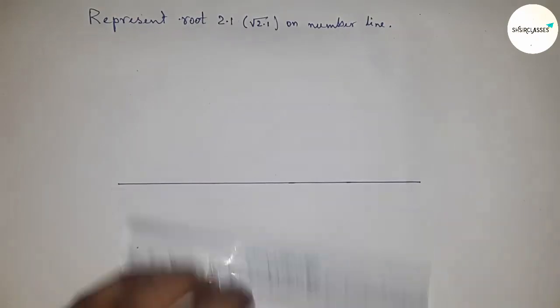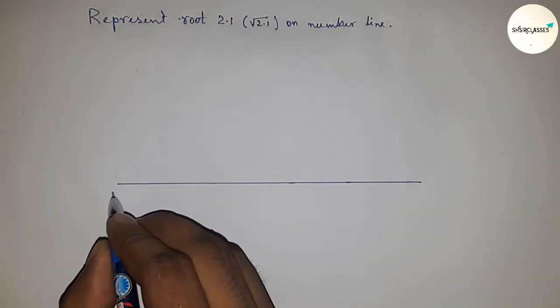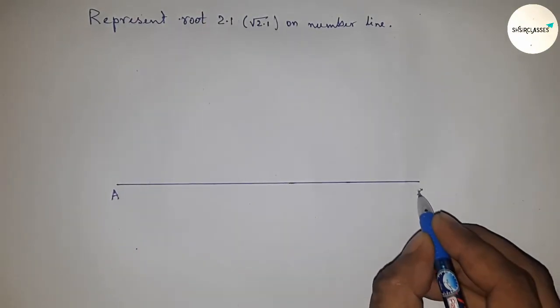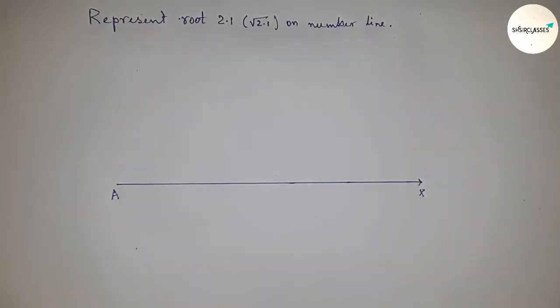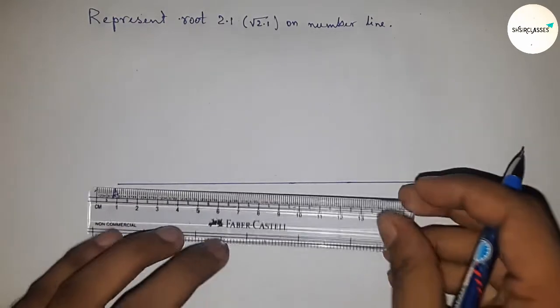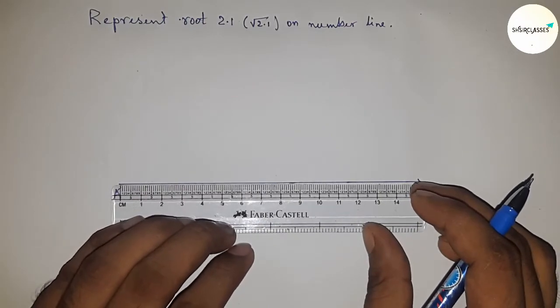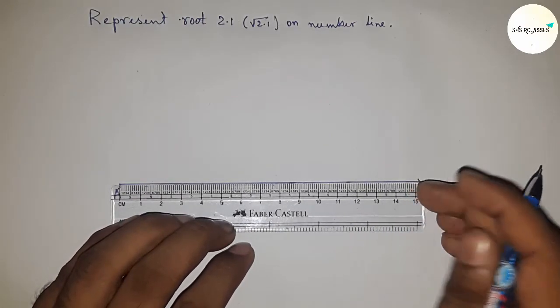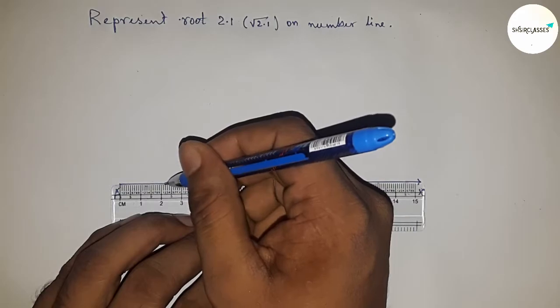Let's start. First of all, draw a line of any length and label it as AX line. Next, take a length or distance using a scale of 2.1 centimeters.